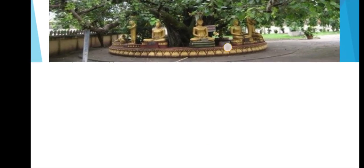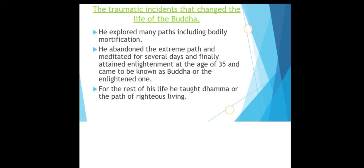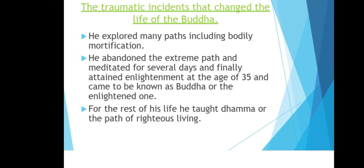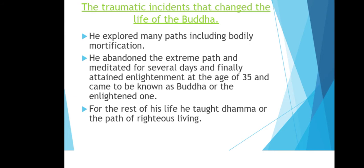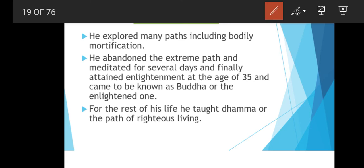Here is a picture of the Bodhi tree at Bodh Gaya where Lord Buddha attained enlightenment and later gave his first sermon at Sarnath. He explored many paths, including bodily mortification, but eventually abandoned the extreme path. He then meditated for several days and finally attained enlightenment at the age of 35, coming to be known as Buddha — meaning 'the enlightened one.'